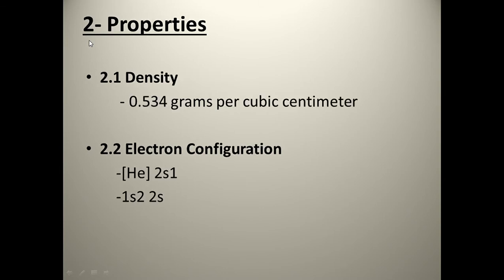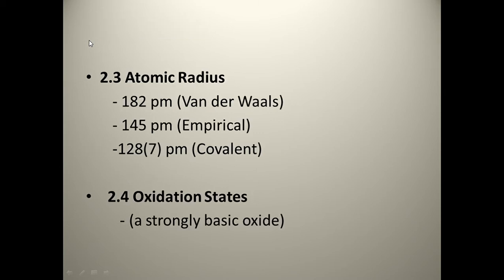Its properties: I'll start with density, which is equal to 0.534 grams per cubic centimeter. Its electron configuration is helium 2s1. The atomic radius of lithium is equal to 182 and its oxidation states — it is considered as a strongly basic oxide.